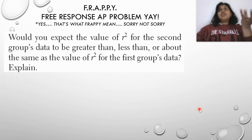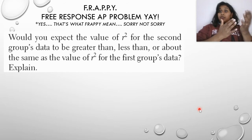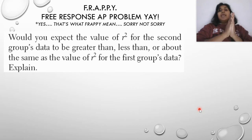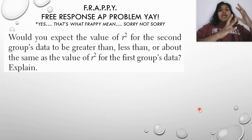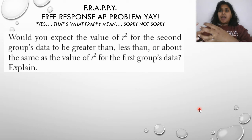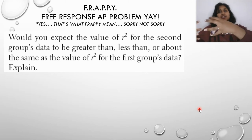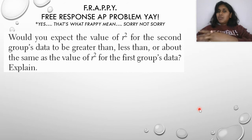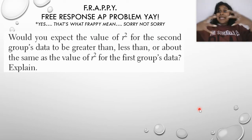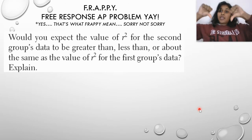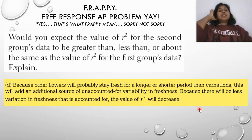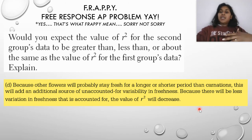In the original experiment we're dealing with carnations — my R-squared value was pretty good, fairly strong, and all the points were pretty close to that LSRL line. But the second group has lots of different kinds of flowers, so you're technically comparing different species and their different freshnesses. Are those associations going to be as strong as when you're just focusing on a single species? Probably not. So my R-squared value is going to decrease — a looser association. Because the flowers will probably stay fresh for a longer or shorter period than carnations, this will be an additional source of unaccounted-for variability in freshness. Because there will be less variation in freshness accounted for, the R-squared value itself will decrease.